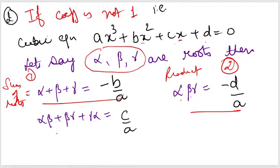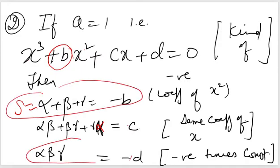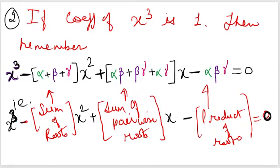If the coefficient of x³ is one, you do not have to divide by anything. So whatever is the coefficient of x², take its negative sign — that becomes the sum. The coefficient of x, which is c, gives the pairwise product sum directly. The constant term d: take its negative sign and that gives the product of all three roots. So for sum and product we always take the opposite sign of those terms.